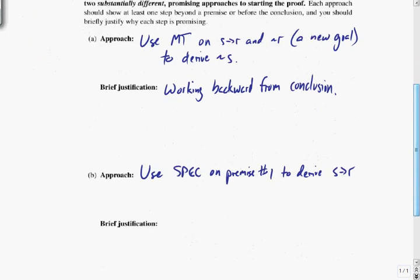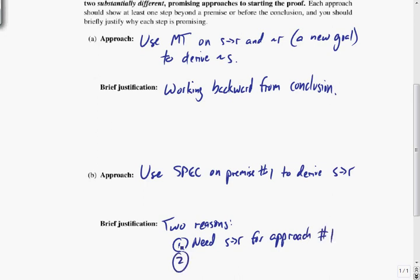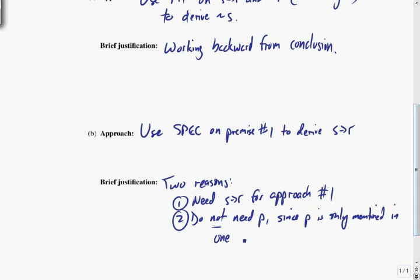And why? Well, I've actually got two reasons for this. We needed S implies R up here. So two reasons. One, need S implies R for approach number one. And second of all, we do not need P since P is only mentioned in one premise. So we can be pretty confident it's not going to get us anywhere.